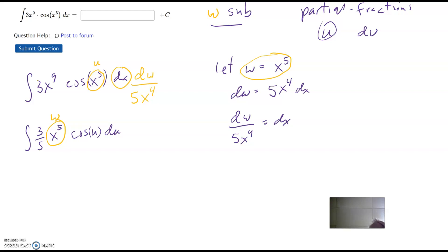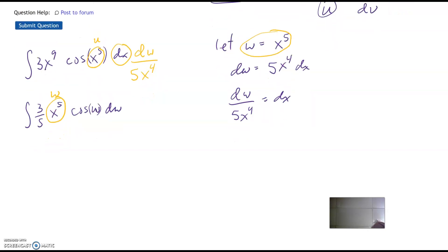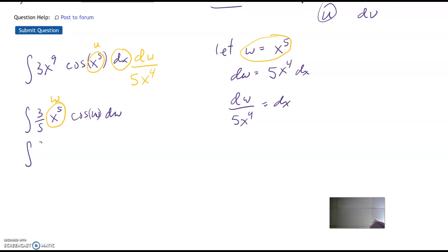Oops, sorry, this should be a w, not a... Sorry, this, yeah. I'm so used to using u substitution, but this should be a dw, and this should be a w as well. So w, w, dw. Okay, so the final substitution will be 3 fifths. I've got w times cosine w times dw.